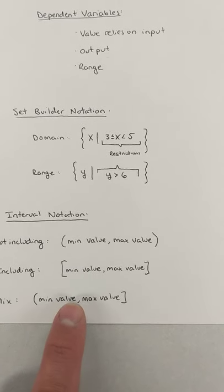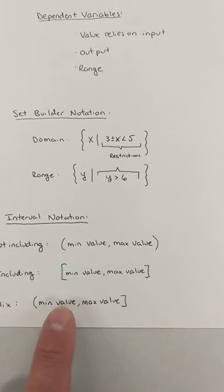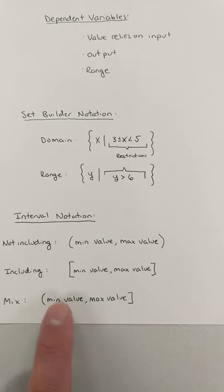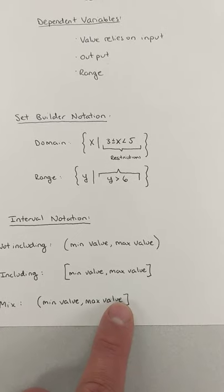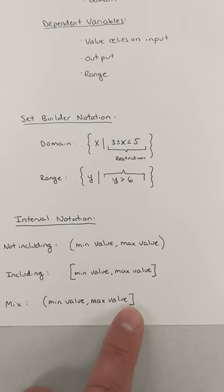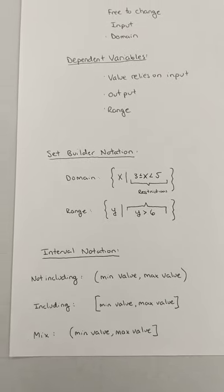So this would be an example of maybe I want something that is less than 0. I would say, parentheses, negative infinity, comma, 0, and then whether I'm including 0 or not, since I said less than 0, I would do another parentheses. If it was less than or equal to, it'd be a square bracket.